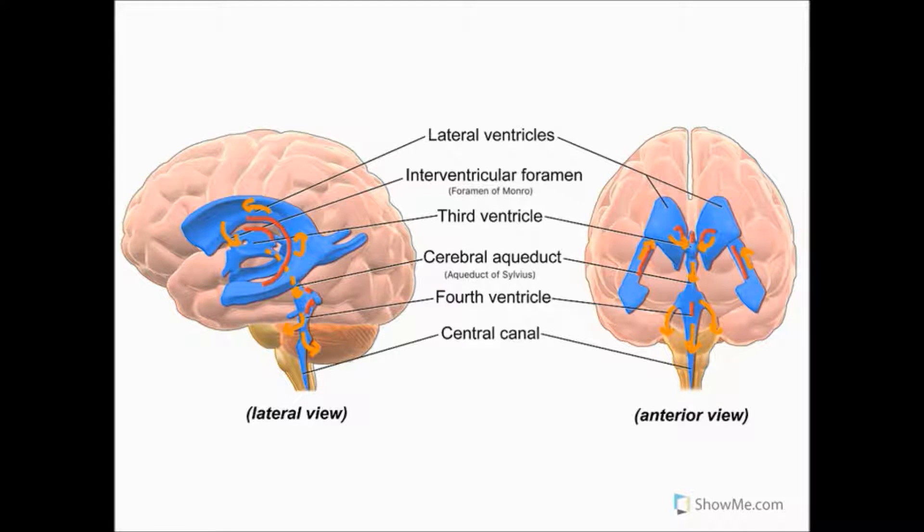Welcome to this Thought and Brain Hub video on the ventricular system of the brain. The ventricular system of the brain is a set of four interconnected cavities that produce and circulate cerebrospinal fluid.